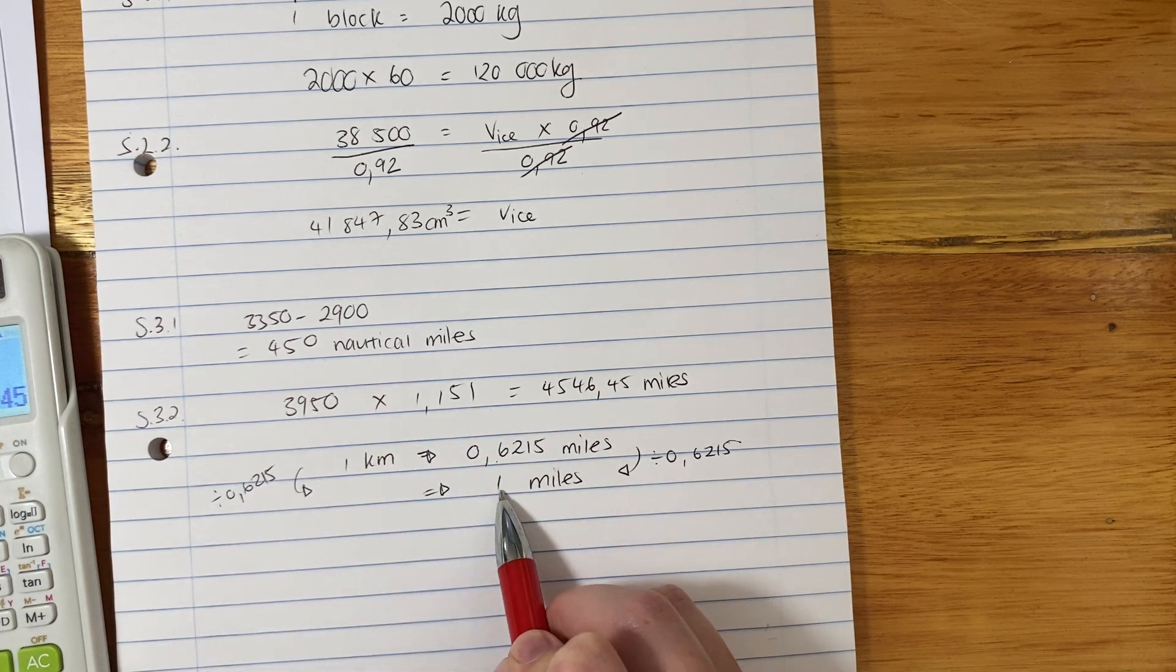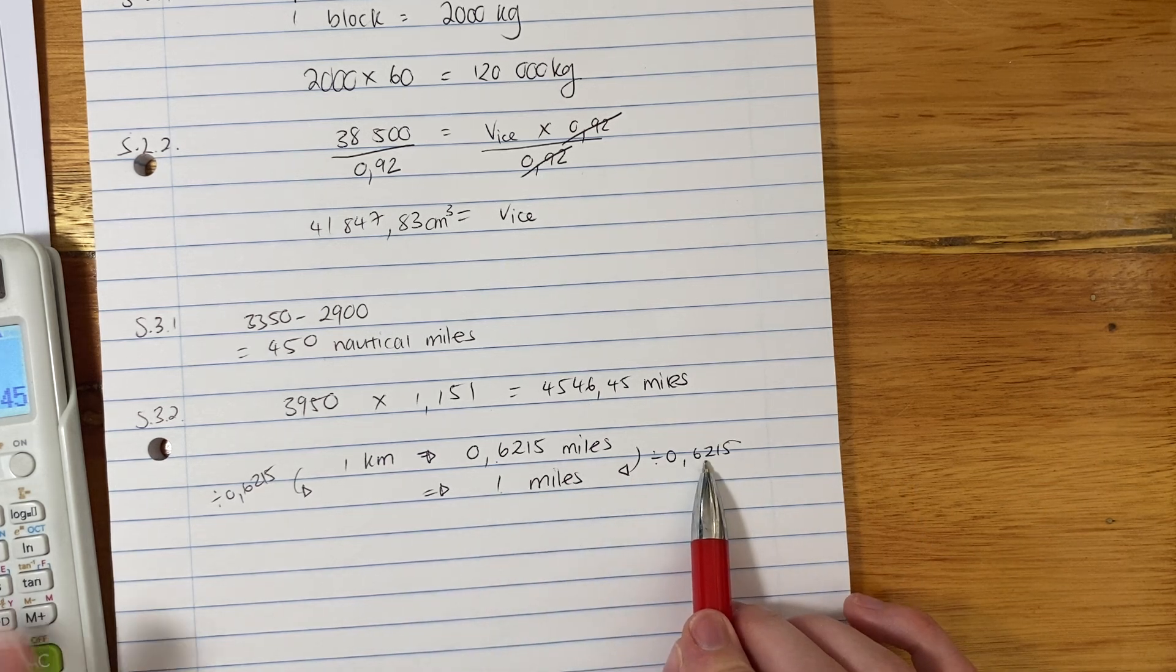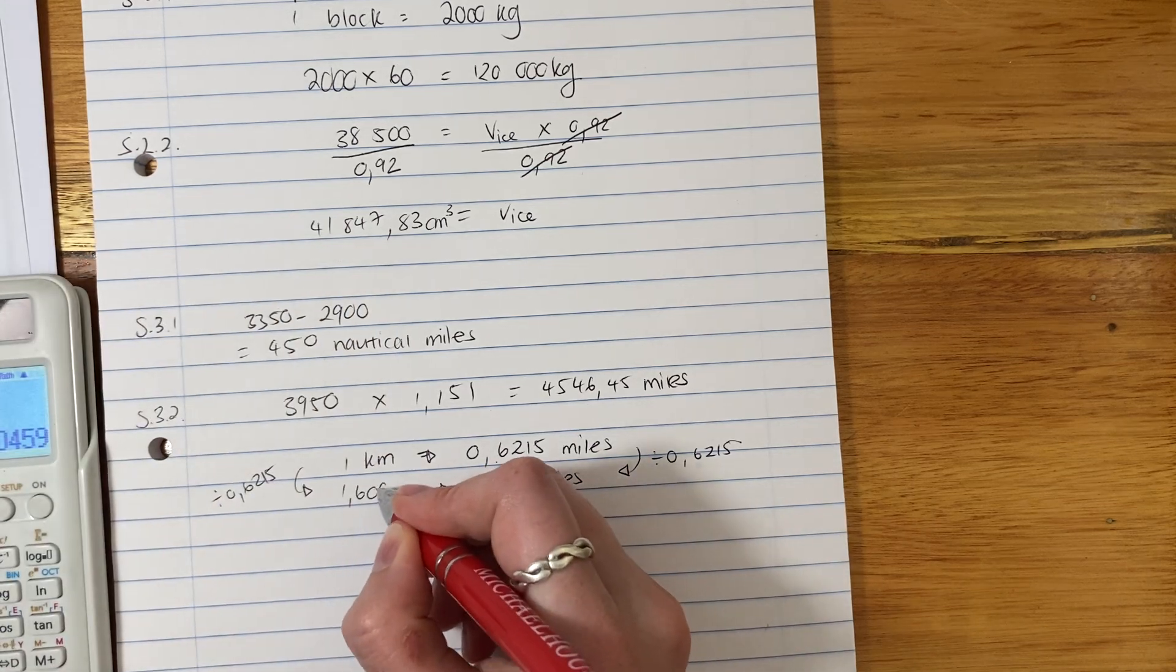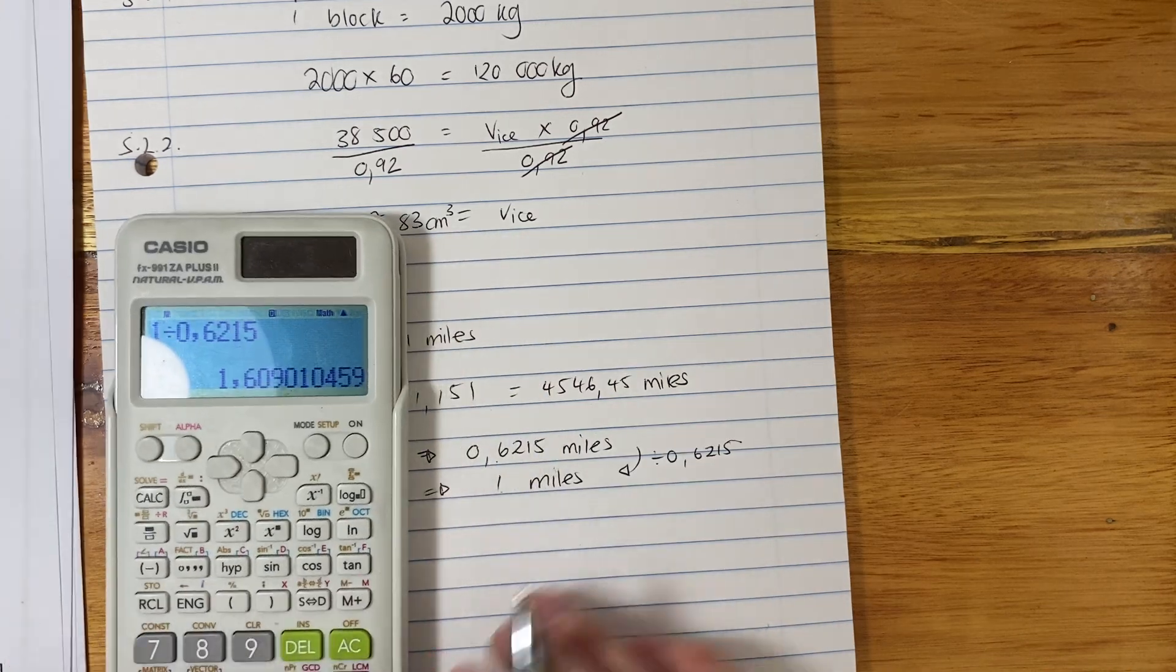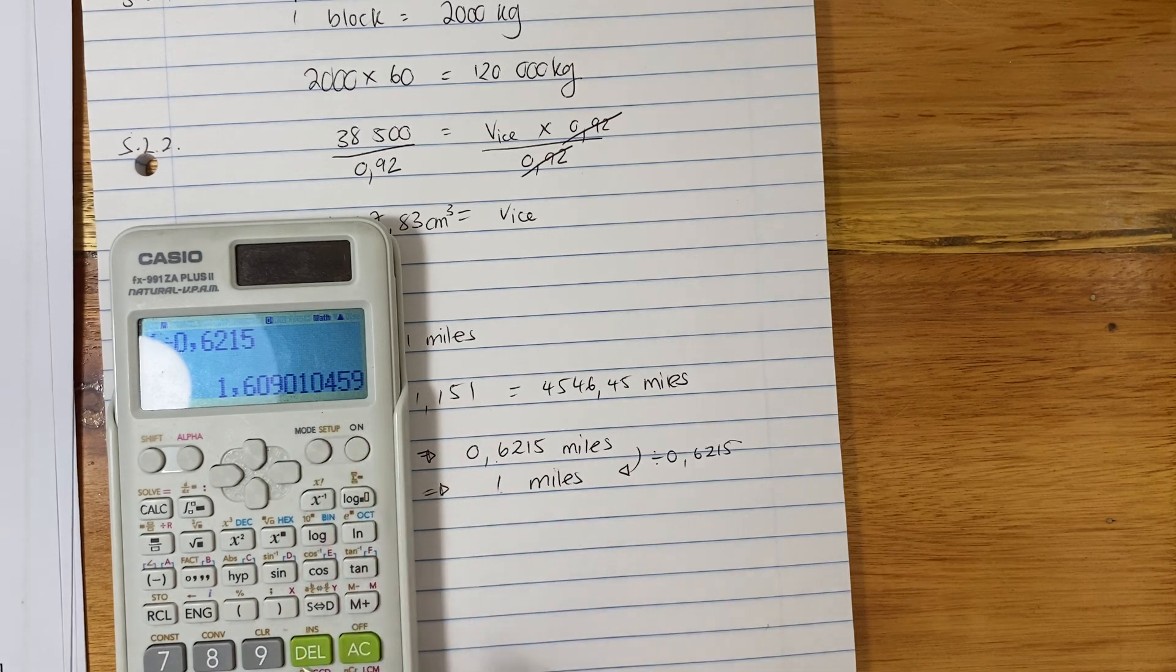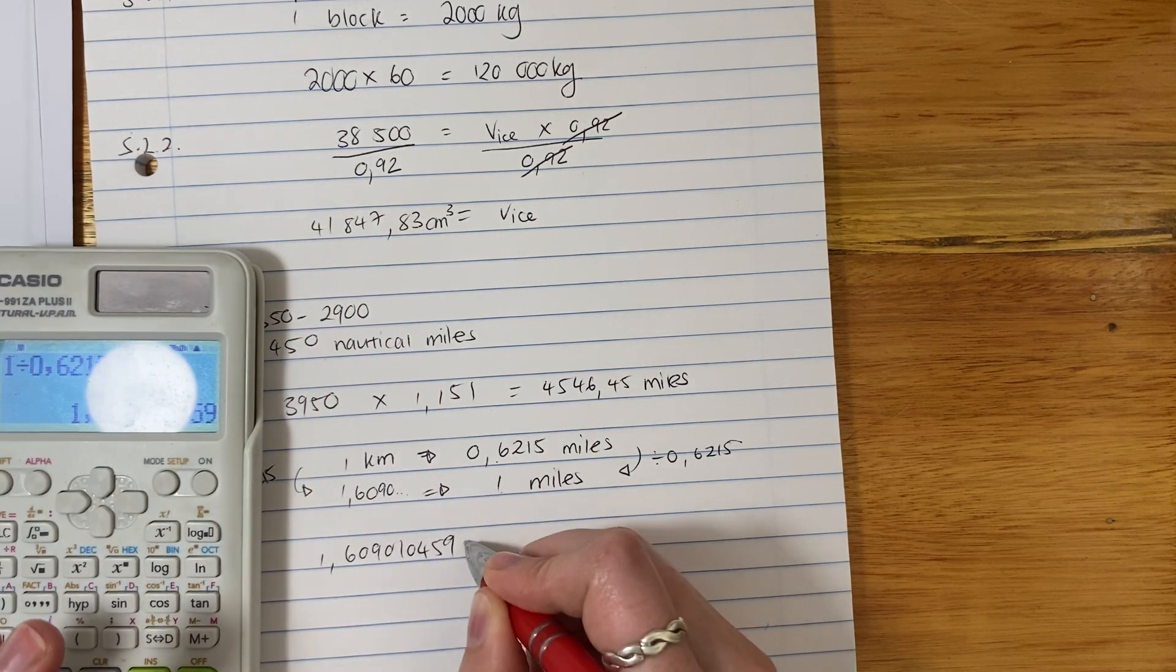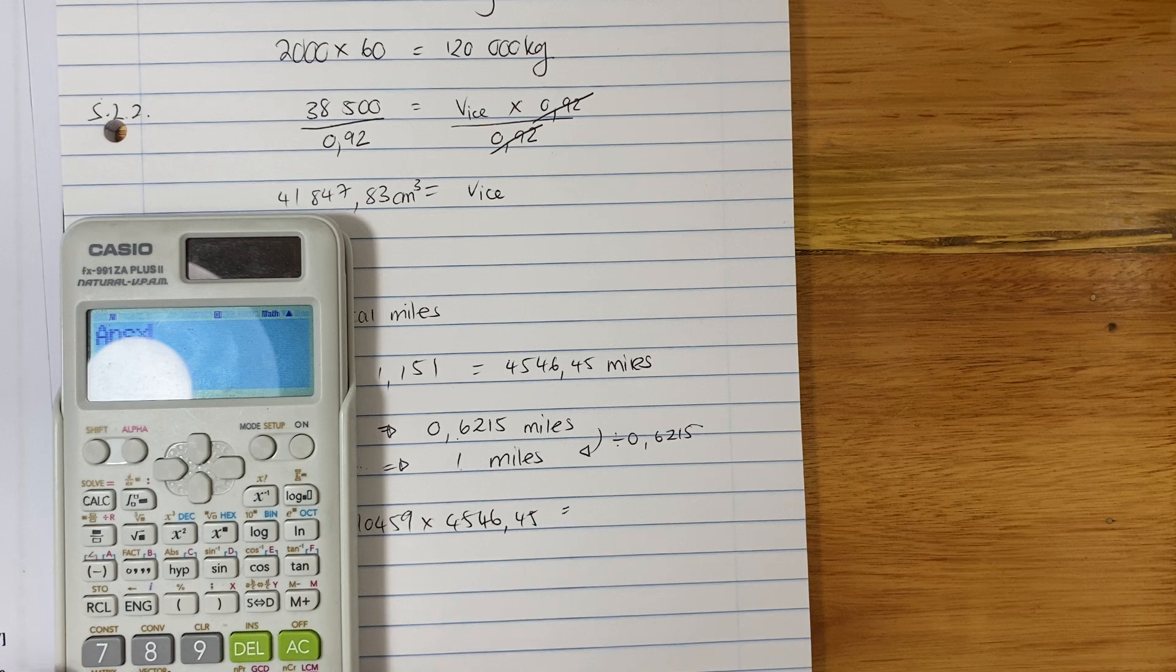Remember, when you're working with ratios, you're looking at times and divide. So I've divided that side by 0,6215. I'm going to do the same on this side. 1,6090. Save this on your calculator. This is the number we're going to now multiply by that number. Because it's saying this is how many kilometers make one mile. Because we're going from miles to kilometers, we're going to say, well, 1,609010459 times 454645. Plug that into your calculator.